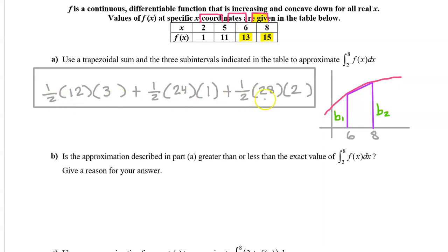I strongly recommend leaving your answer in this unsimplified form so you don't risk making a careless mistake on the simplification and losing points. However, this does simplify to 58.